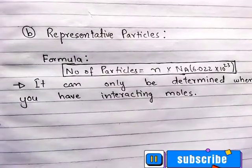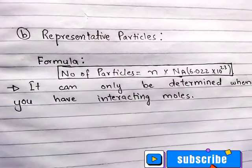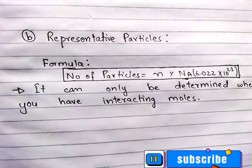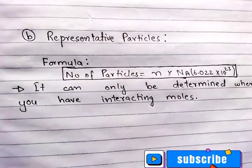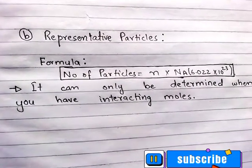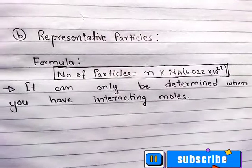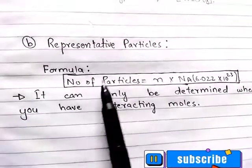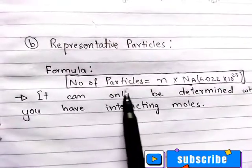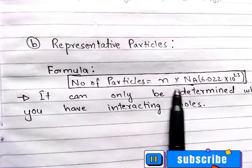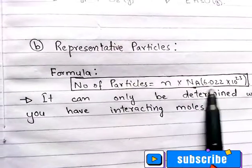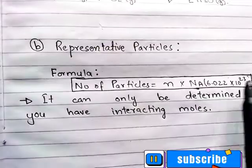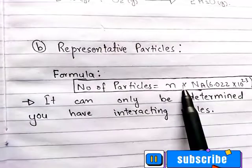The representative particles — that means how many particles are involved in a chemical equation. In a balanced chemical equation, we use the formula: number of particles equals number of moles multiplied by Avogadro's constant Nₐ. We need to learn this formula.